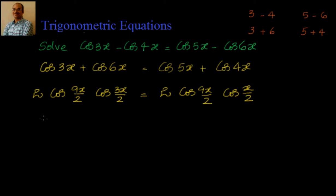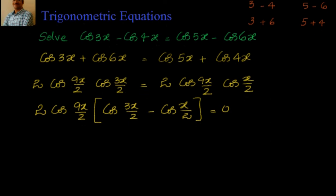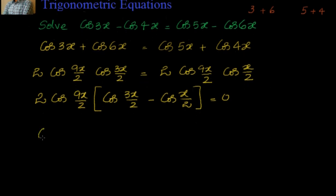Now if I bring everything to one side, I can take 2 cos(9x/2) common. This gives cos(3x/2) minus cos(x/2) equal to 0. This gives me two equations: one is cos(9x/2) equal to 0, or cos(3x/2) minus cos(x/2) equal to 0.